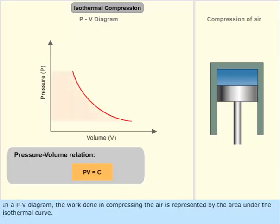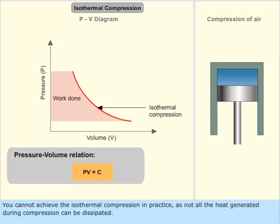In a PV diagram, the work done in compressing the air is represented by the area under the isothermal curve. You cannot achieve the isothermal compression in practice, as not all the heat generated during compression can be dissipated.